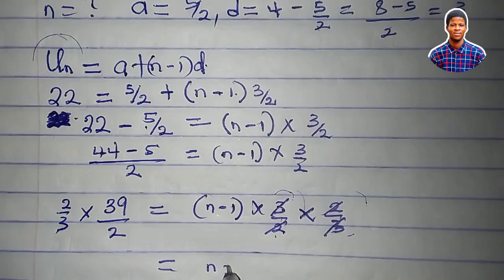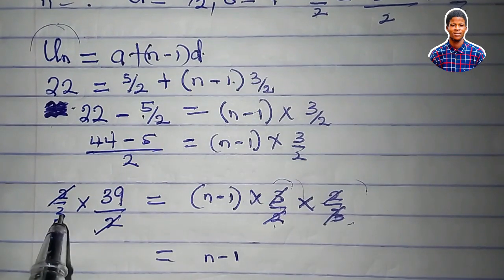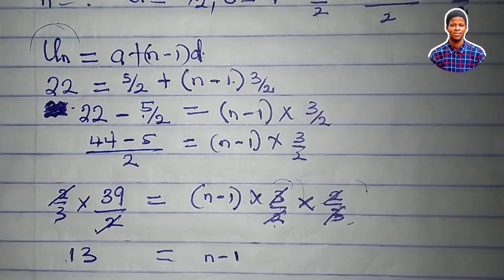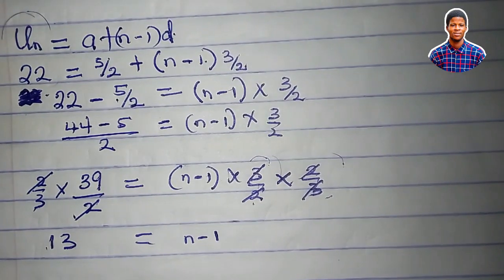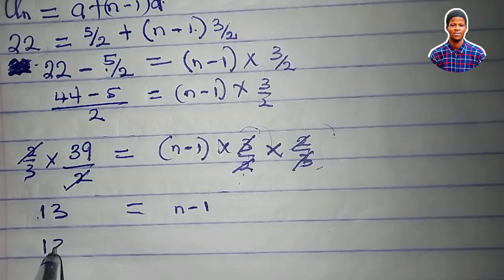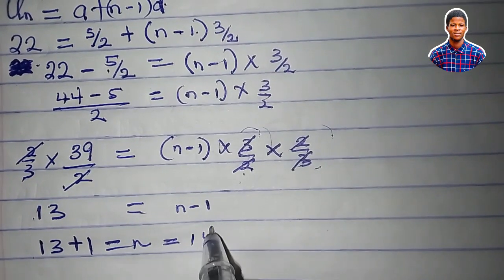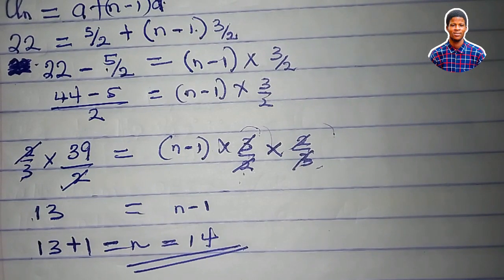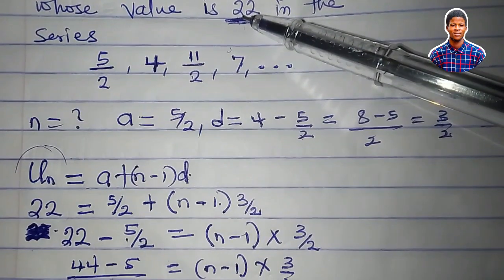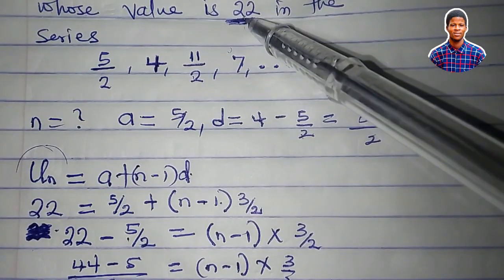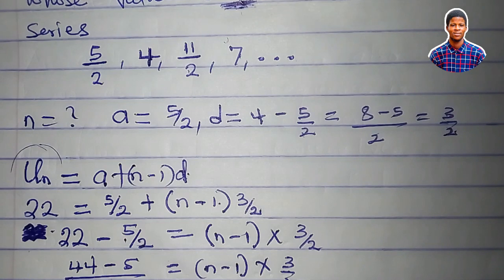What I have now is just n minus one. So two can cancel two here. I have thirty-nine all over three, which equals thirteen. So thirteen equals n minus one. From here, I can easily get my n. Collecting like terms, we have thirteen. The one will cross and turn to a plus. Thirteen plus one is fourteen. So it means that the fourteenth term of the series is twenty-two. Twenty-two is in number fourteen in the sequence. The fourteenth term is twenty-two. n is fourteen.